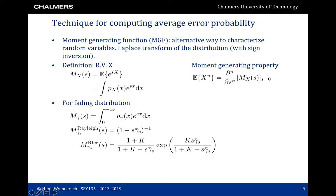One thing we didn't talk about last time is that there exists a convenient technique for computing average error probabilities, because in general you need to solve an integral that may not be very tractable. This technique is based on the moment generating function, which is essentially the Laplace transform of the distribution. Given a random variable x with density P, we compute the moment generating function mx(s) by integrating the density times e to the power s over x. This function has the moment generating property: by taking derivatives and evaluating at s equal to 0, we find the moments of the original random variable.